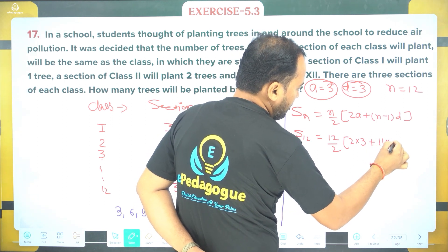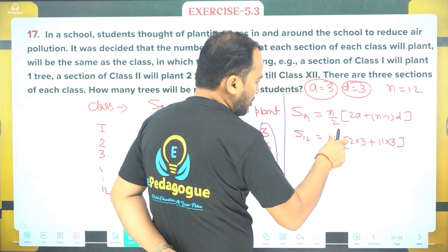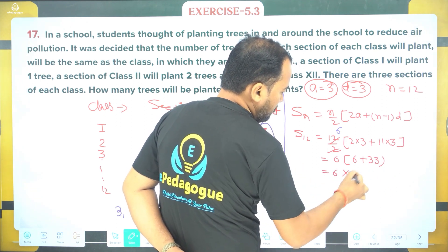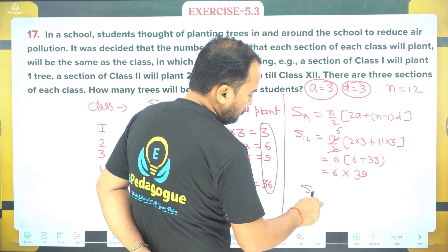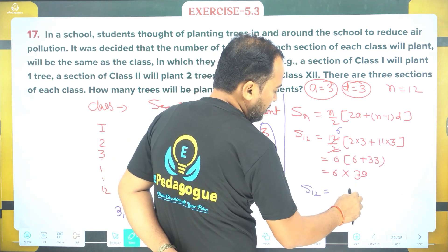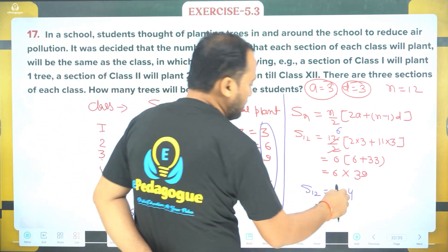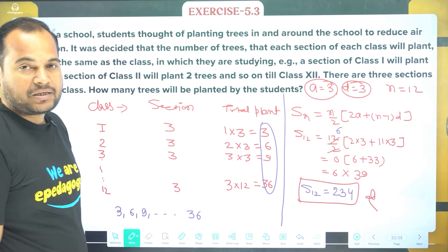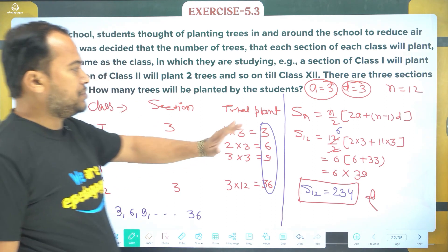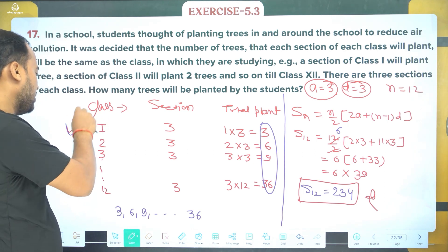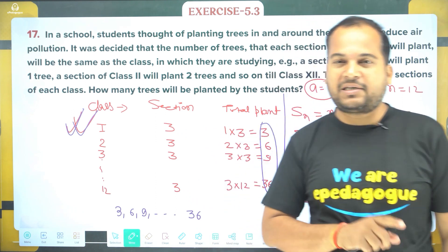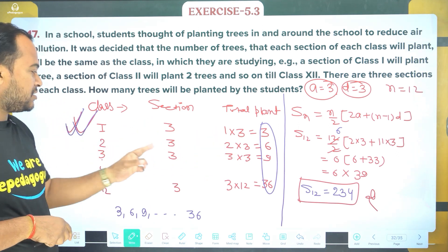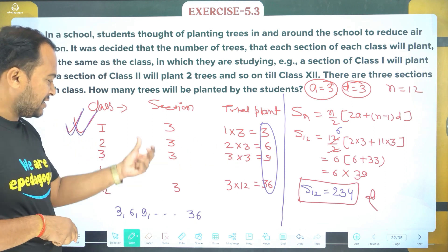2a = 6, plus 11 into 3 = 33, so 6 + 33 = 39, multiplied by 6 equals 234. So the total number of trees planted is 234. This series is important — each class has three sections, and the number of trees follows an arithmetic progression.